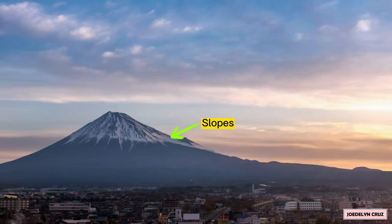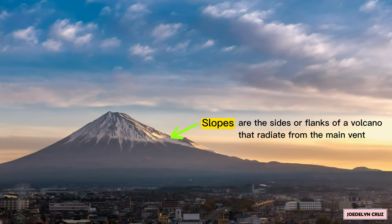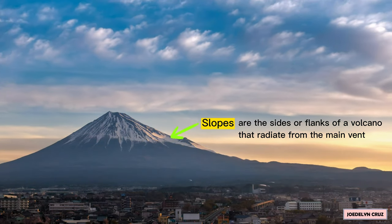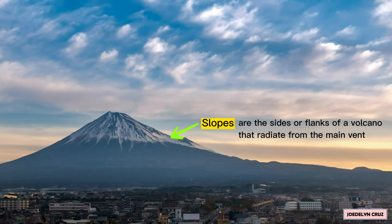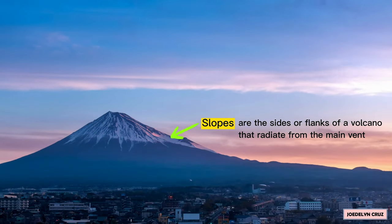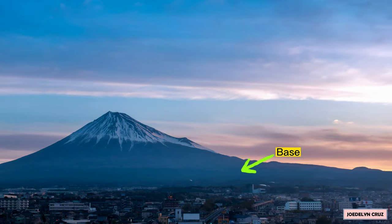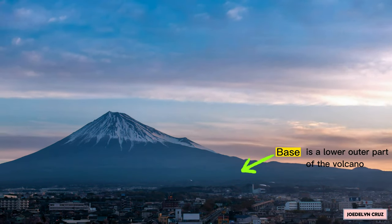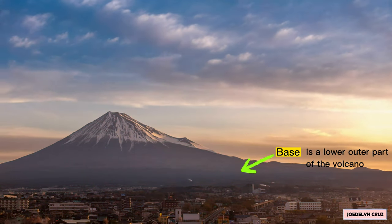Slopes are the sides or flanks of a volcano that radiate from the main or central vent. The base is the lower outer part of the volcano, found on the outer end of the volcano.